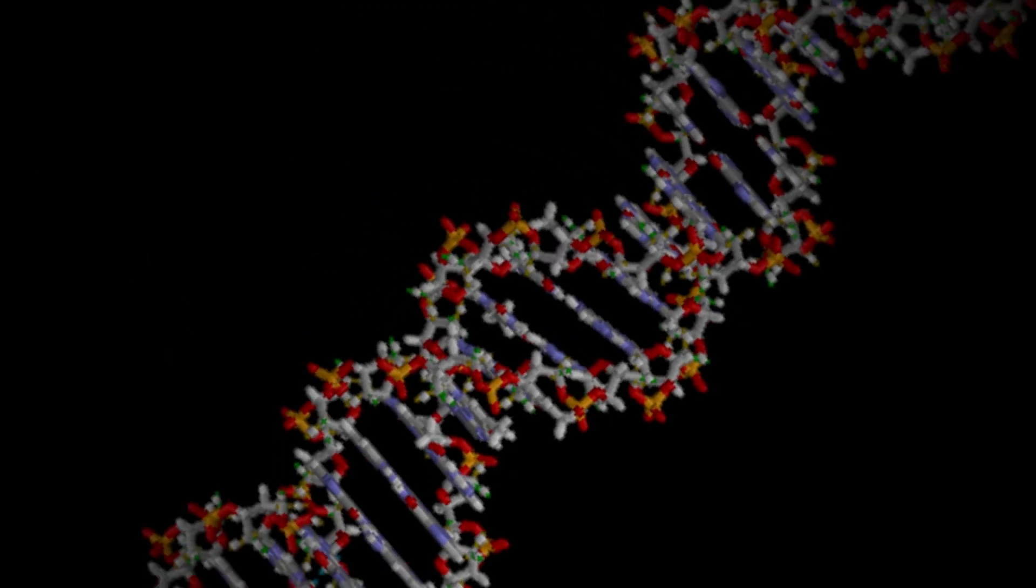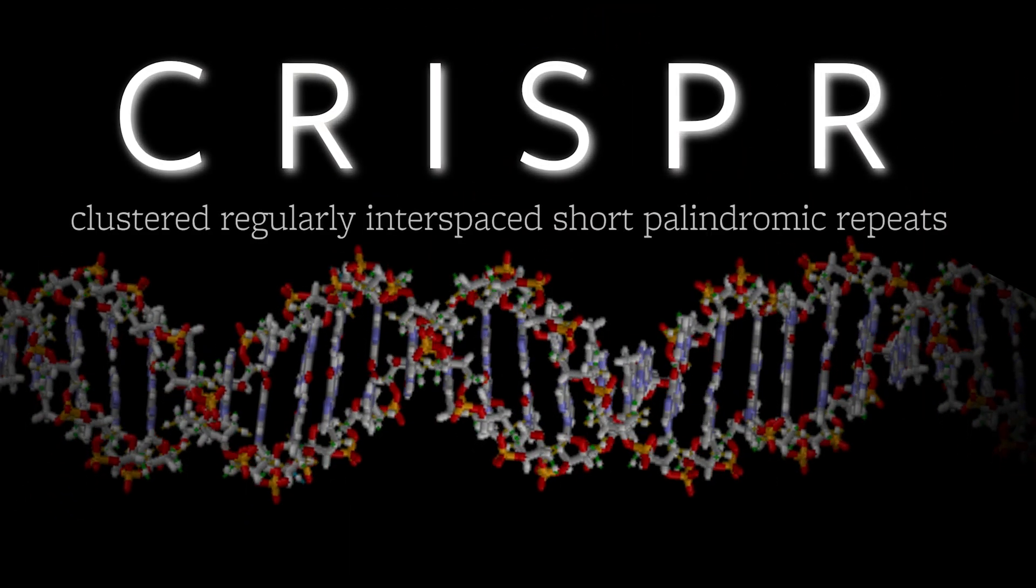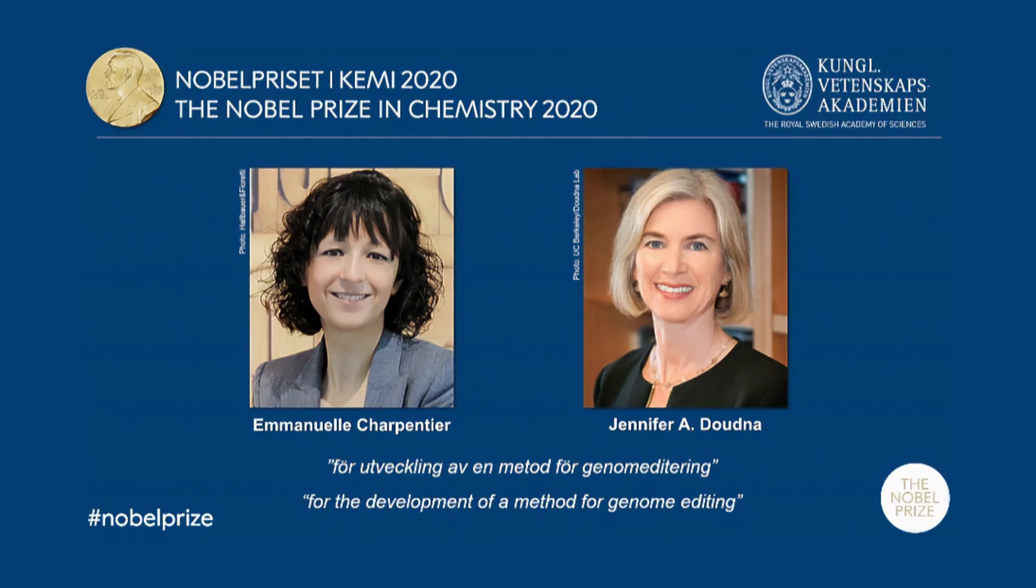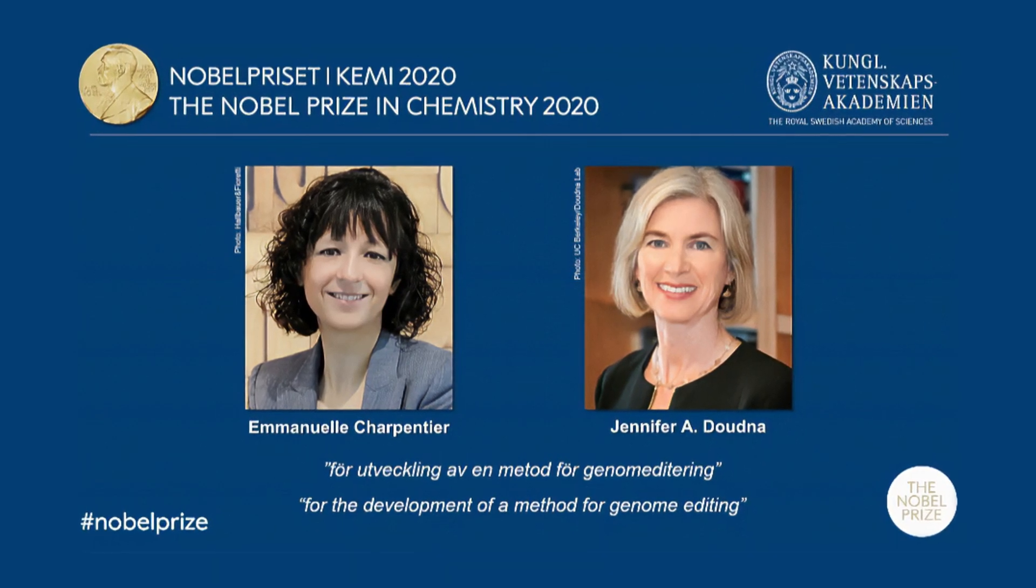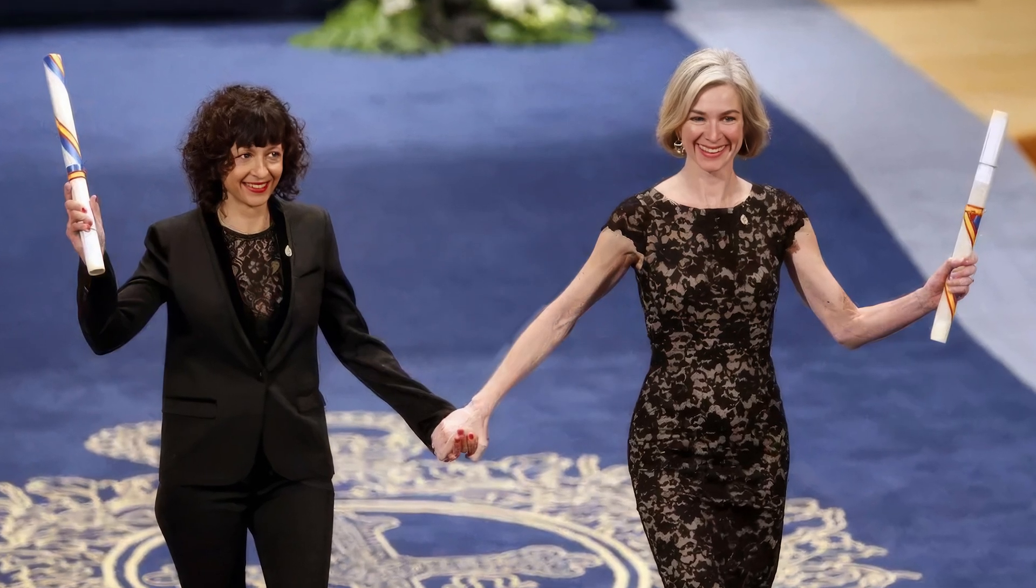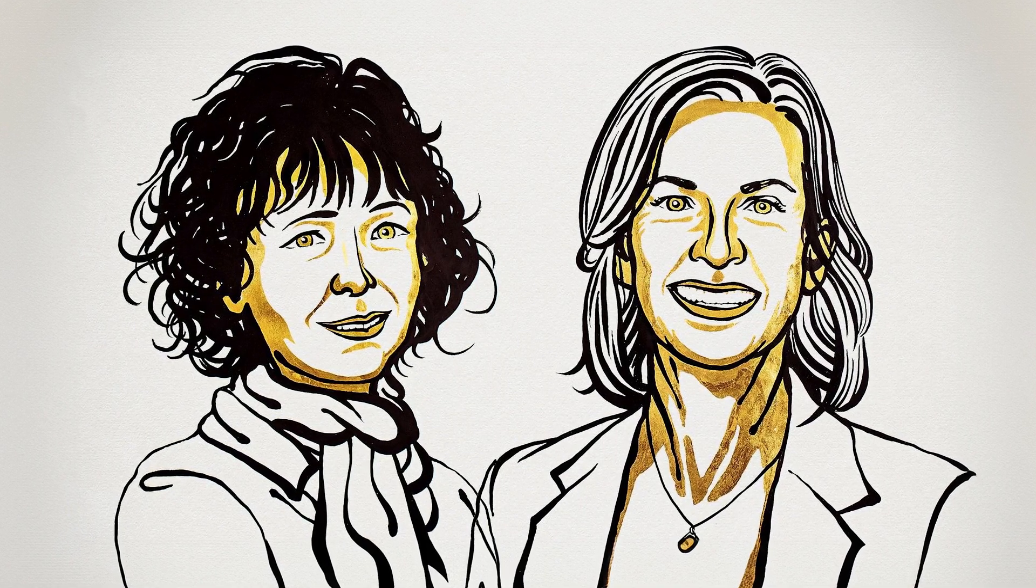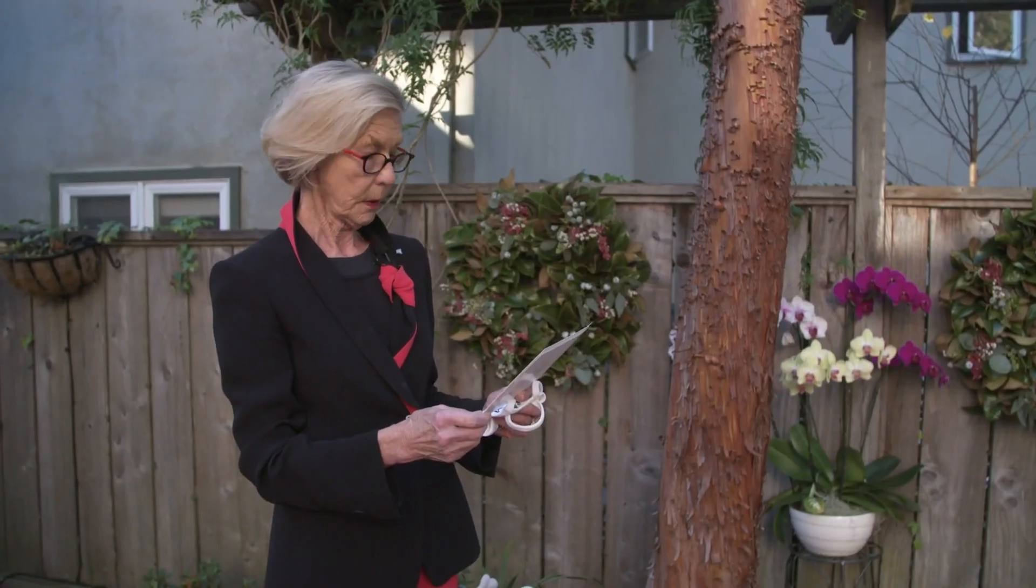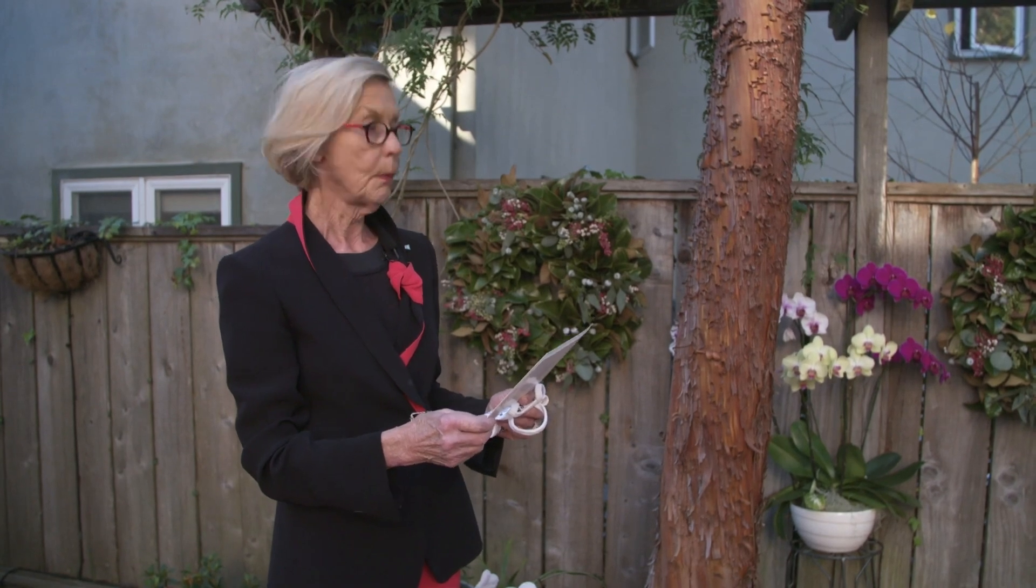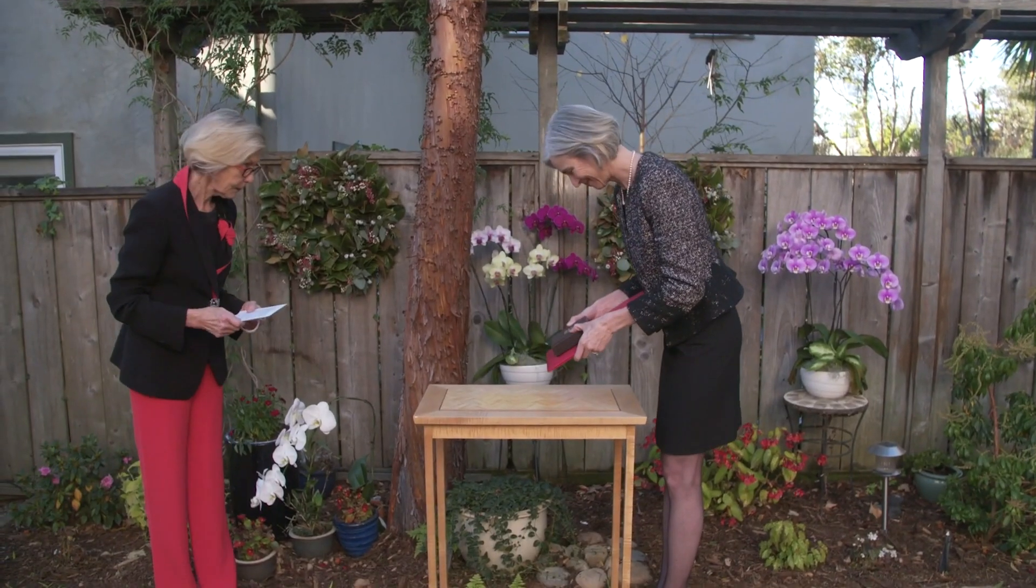The Royal Swedish Academy of Sciences has today decided to award the 2020 Nobel Prize in Chemistry jointly to Emmanuel Charpentier and Jennifer Doudna for the development of a method for genome editing. It is a great honor to convey to you my warmest congratulations and ask you to receive the Nobel Prize.